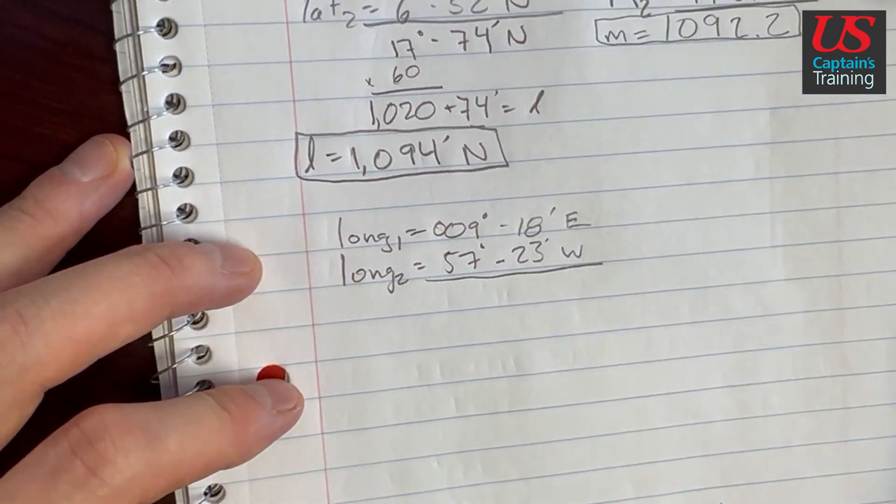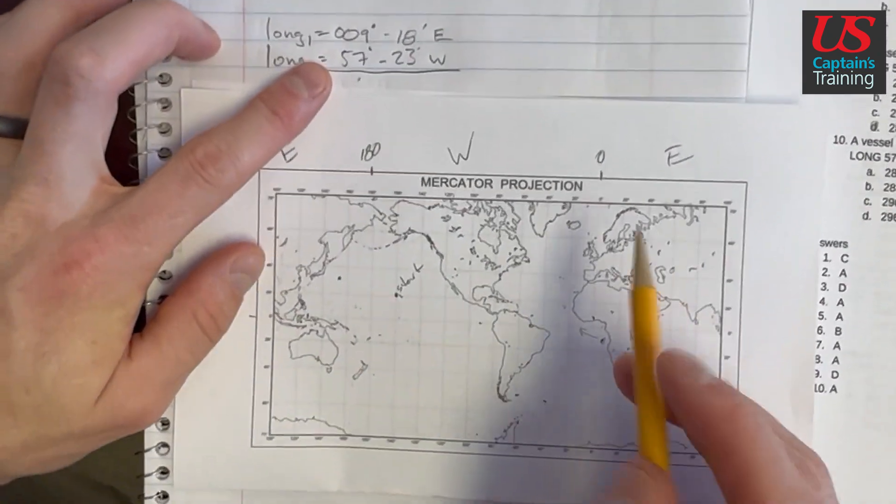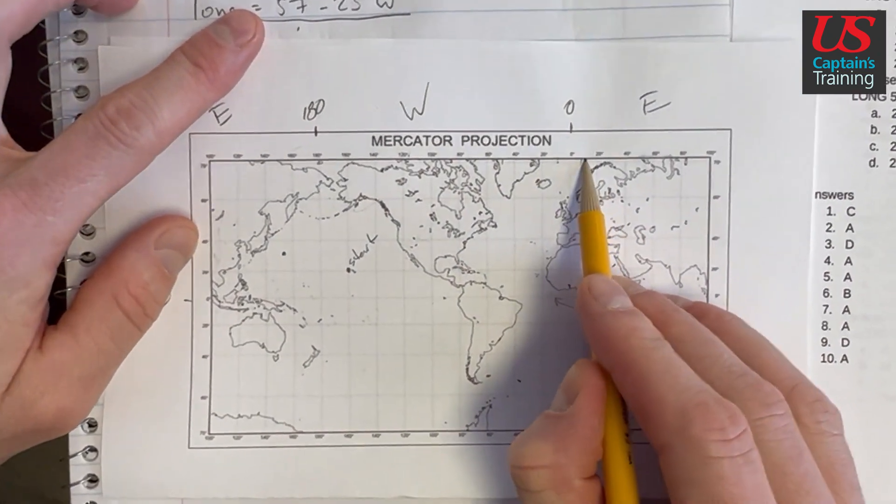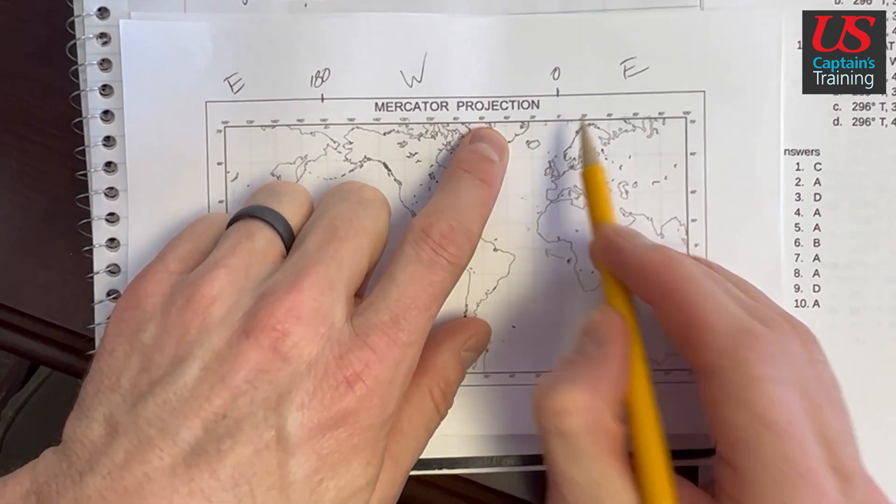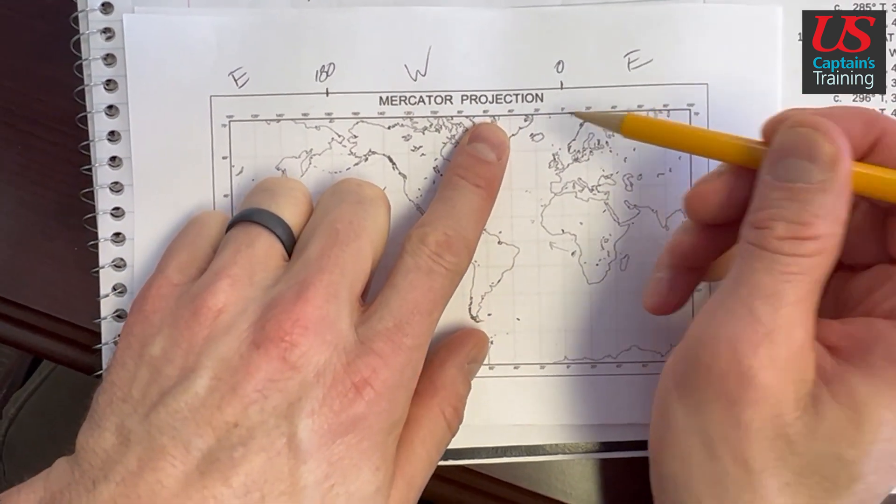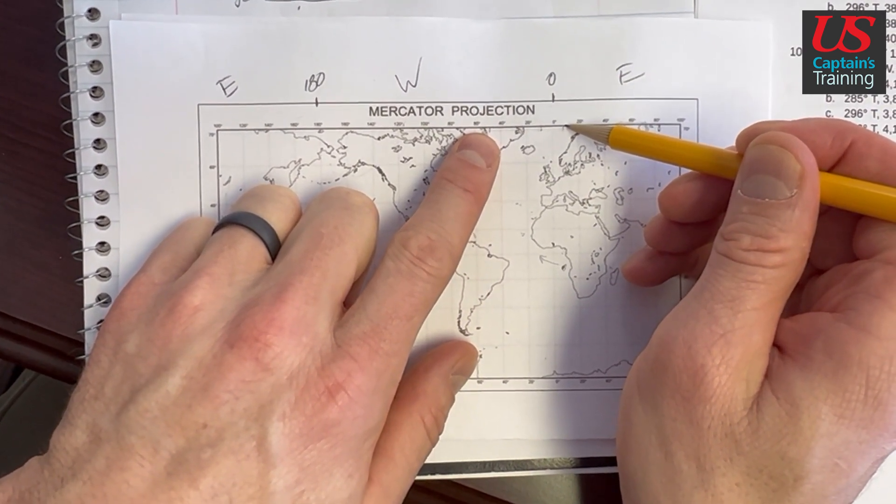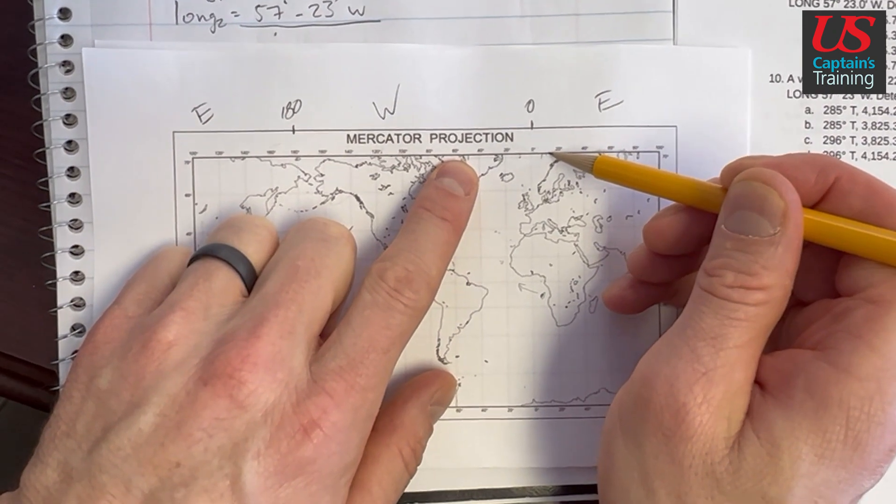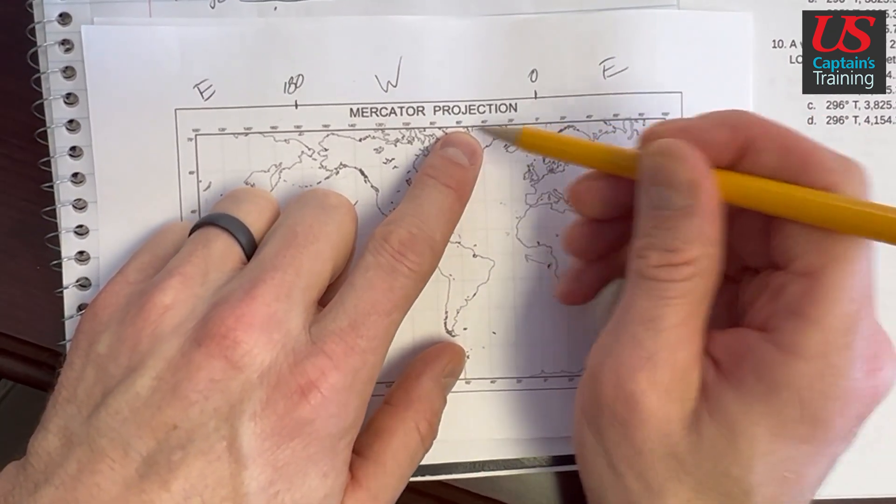We need to find the difference between these. So let's see where we went. We started 9 degrees east, so we started over here about 9 degrees east. And we went over here to 57. So we went west. And we need to add these because we went from 9 to 0 and from 0 to 57. So we add these together and we went west.